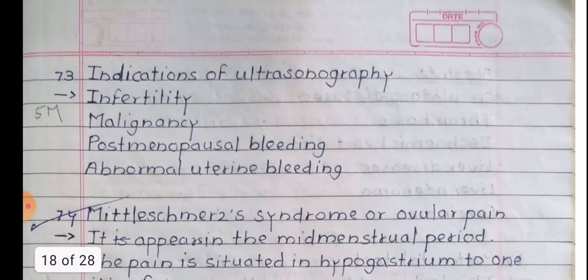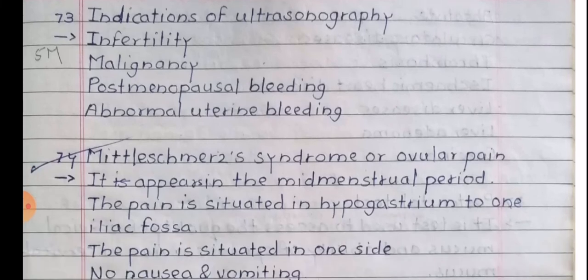Indications of ultrasonography: infertility, malignancy, postmenopausal bleeding, and abnormal uterine bleeding.